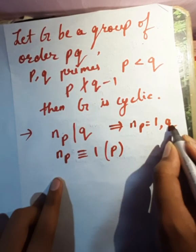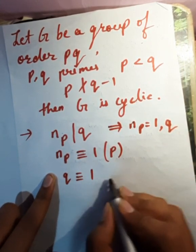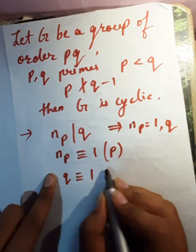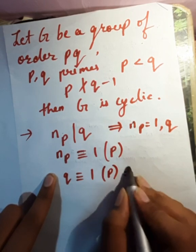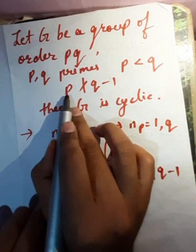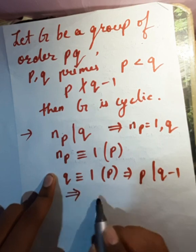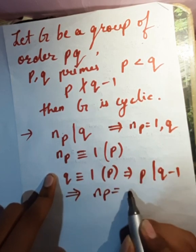Now, if n_p were q, we get q is congruent to 1 mod p, which implies p divides q minus 1. But since we are given p does not divide q minus 1, this is not possible, which implies n_p equals 1.